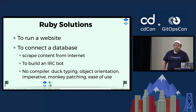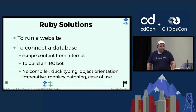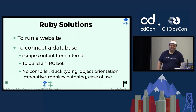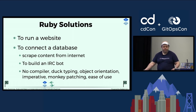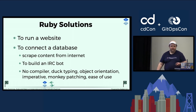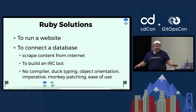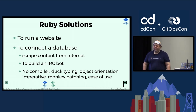What are the types of things we typically use Ruby for? Number one is to run a website. Number two, subsumed by the first, is to connect to a database. Maybe scrape content from the internet. Build an IRC bot. There's no compiler needed — you can do all these cool things. But all these things are much harder in WebAssembly.